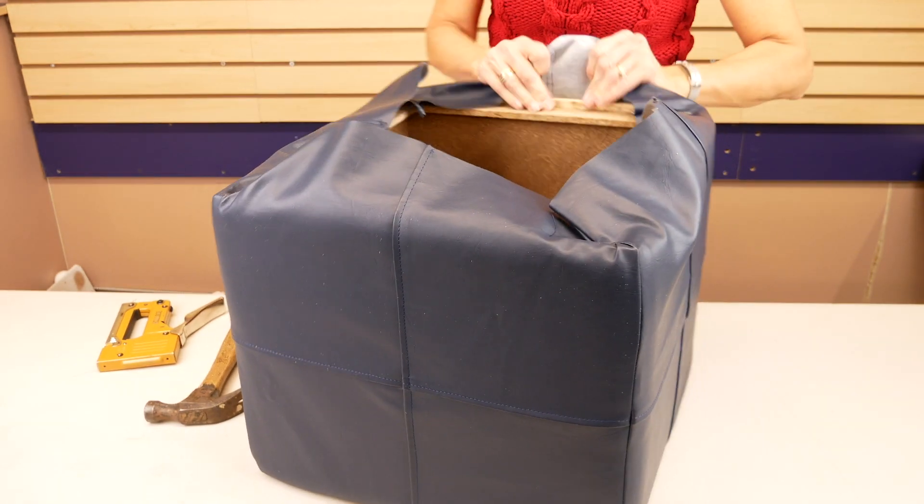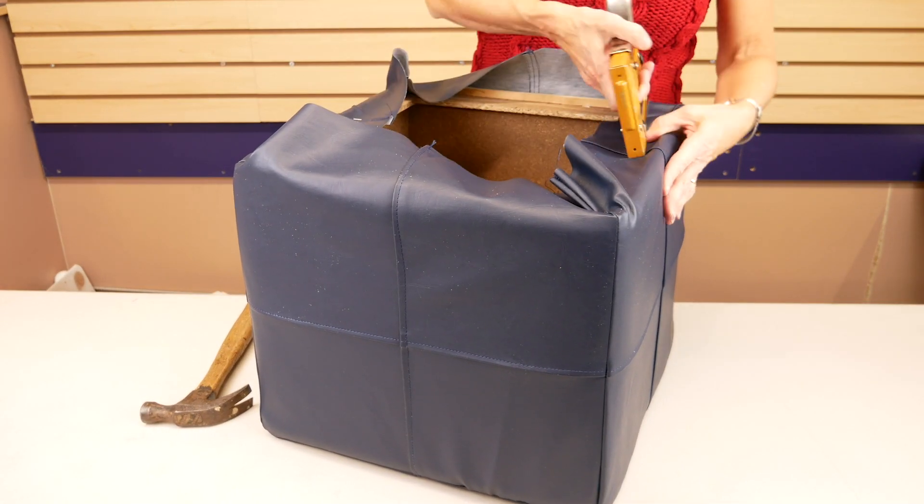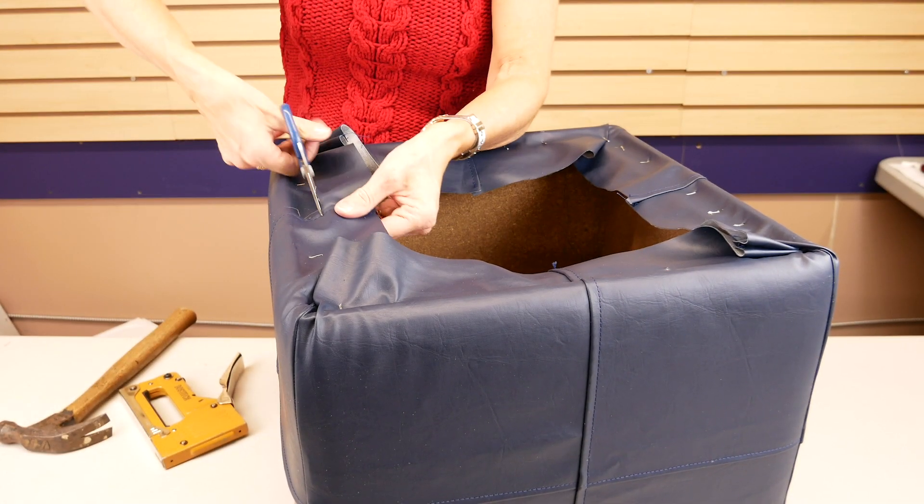Flip your unit over to check that everything is in place, then flip it back and continue stapling around the bottom, folding the excess in at the corners and adding several staples to hold the corners tight. Trim away any excess fabric.